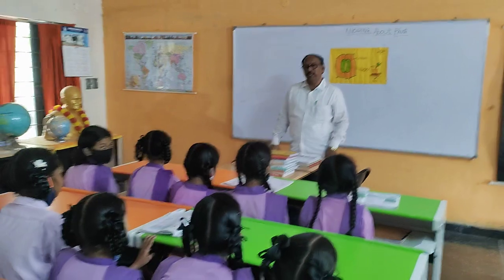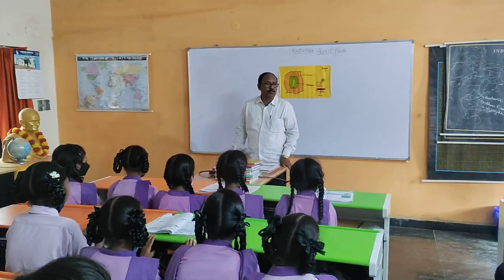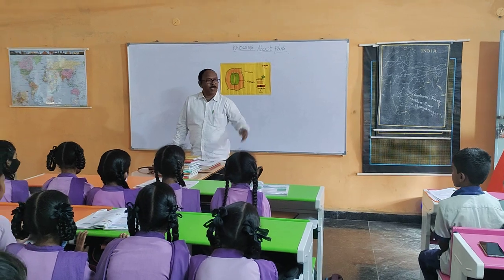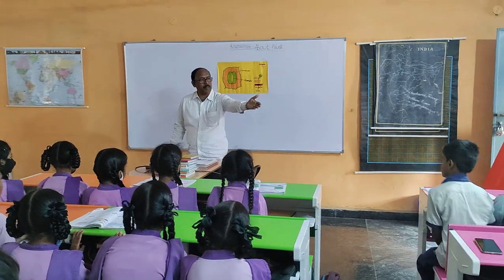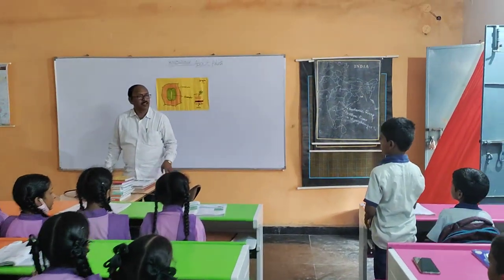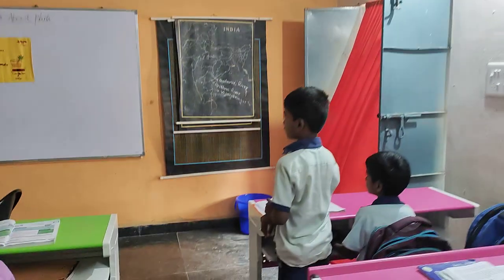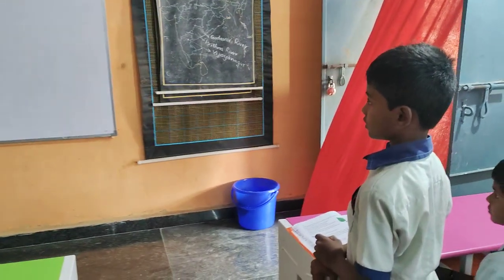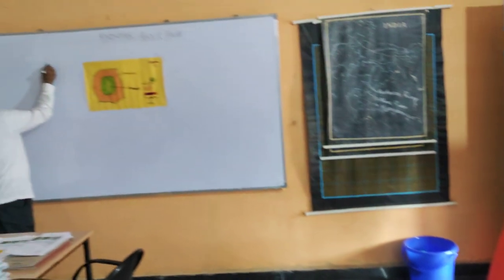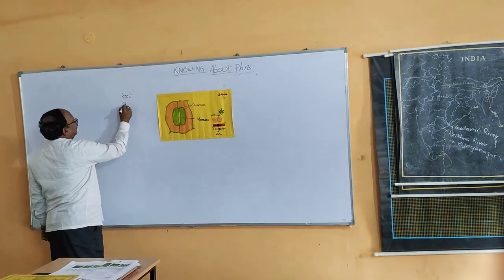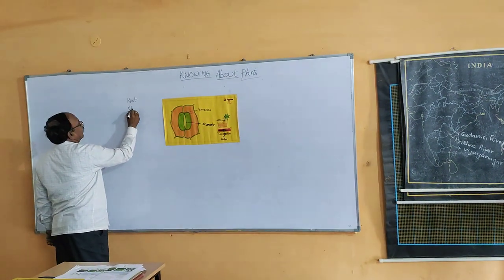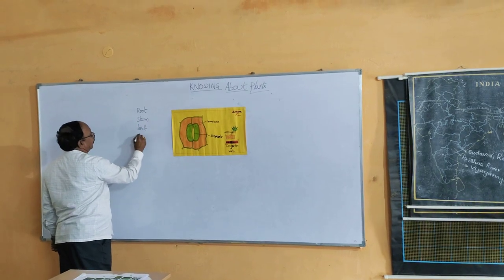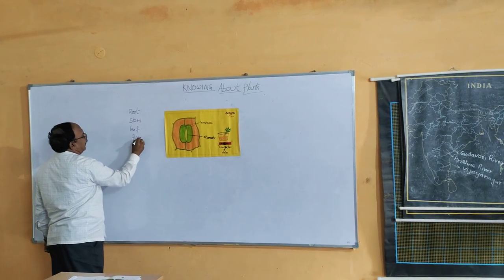Most of the students know about plants. What are the parts of the plant? Root, stem, leaf, flowers, branches — root, stem, leaf, flower, seed.